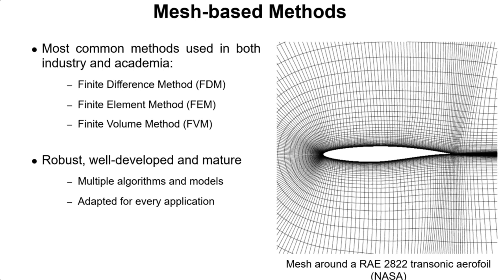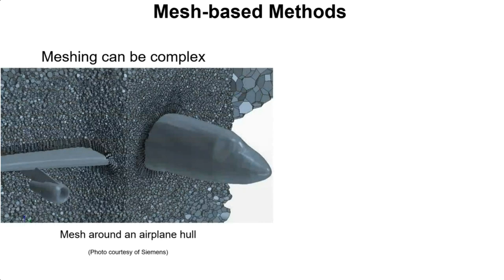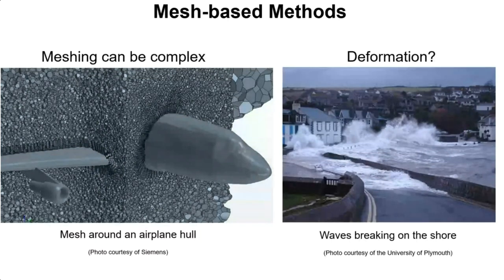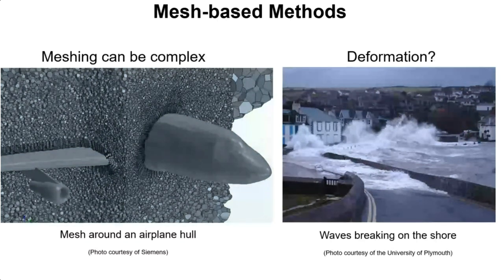The most commonly used computational methods are what we call mesh-based methods, such as finite difference methods or finite element methods. In these methods we have fixed points on a grid which are connected to each other. These methods are robust, well-developed, and mature, with a lot of algorithms and models adapted for every application. However, they have issues. First, meshing itself can be complex — this image shows the meshing around an airplane hull, and as you can see, just creating the mesh can take months before you even start running the simulation. The other important issue for us is the deformation of free surface flows: we work with violent free surfaces that are constantly changing, so if we use a mesh-based method we constantly need to re-mesh, change the grid, and redo the calculation, which is very time-consuming.